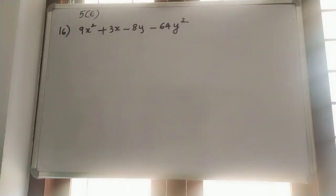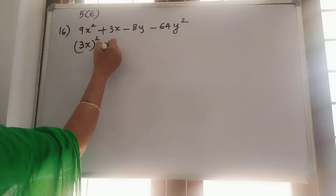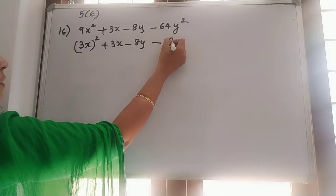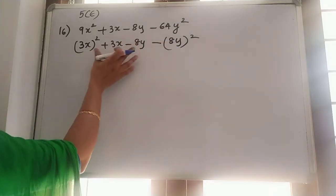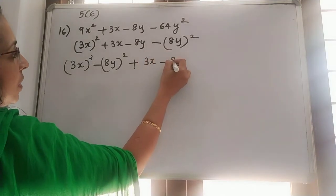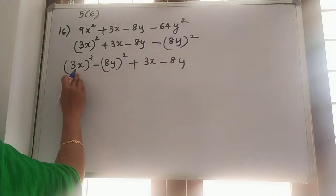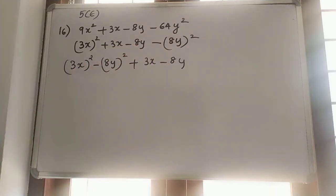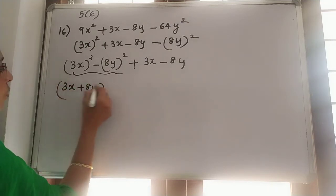16th one: 9x square plus 3x minus 8y minus 64y square. So 9x square we can write as (3x) whole square, and 64y square we can write as (8y) whole square. These two have a connection, so 3x whole square minus 8y whole square plus 3x minus 8y — just changing the place, interchanging only. Take negative 8y square near to (3x) whole square. So (3x) whole square minus (8y) whole square is in the form of a square minus b square, which is a plus b into a minus b. So 3x plus 8y into 3x minus 8y.